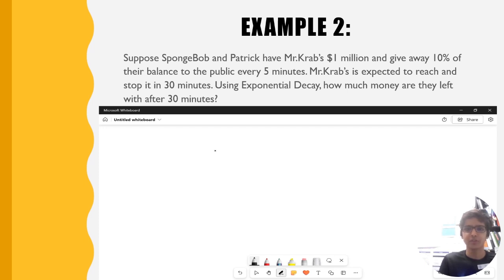Example 2: Suppose SpongeBob and Patrick have $1 million and tend to give away 10% of their balance to the public every 5 minutes. Mr. Krabs is expected to reach and stop in 30 minutes. Using exponential decay, how much money will they be left with after 30 minutes?